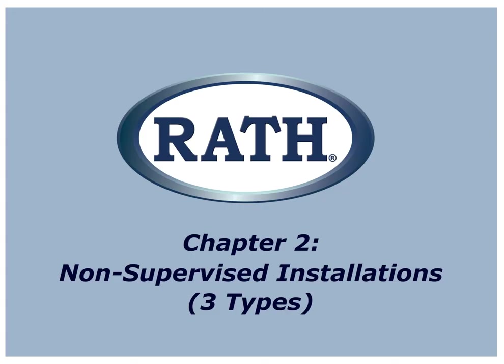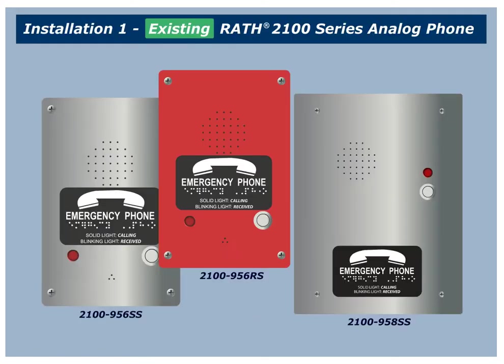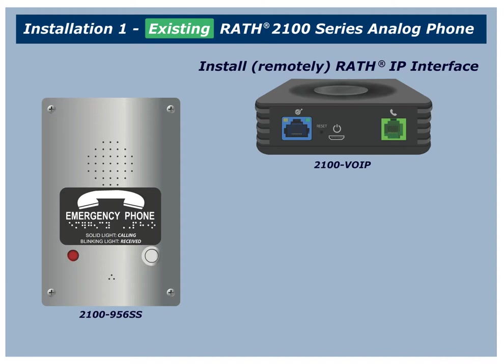Chapter 2: Non-Supervised Installations. We will begin by discussing three non-supervised installations. Installation number 1: Existing Rath 2100-Series Analog Phone. The first type of installation occurs when you already have a Rath 2100-Series analog phone installed in the elevator, or have added a new 2100-Series phone to replace a non-compatible model. To allow this phone to communicate on an IP phone system, a remote IP interface is needed.